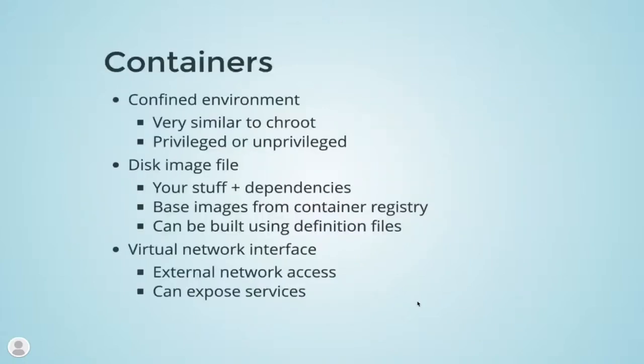Going back, I can show it graphically. This was our file system: there is a bin/BusyBox, etc, a root folder, and we created a test folder. In that test folder we created a bin folder and copied BusyBox into it. We created a confined environment — our program couldn't get outside this red marking. Containers are built on top of these. It's a confined environment, very similar to the example I just showed. It can be privileged or unprivileged, run as a user, it has a disk image file — using the same image file we created in the previous storage example — and that image file usually contains your stuff plus the dependencies. You can build these images from existing base images in container registries, push yours up there, write Dockerfiles that create those container images, and it provides a virtual network interface so you can access external networks and expose services.